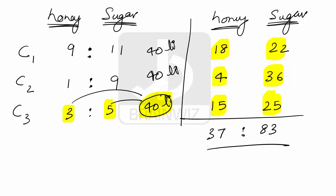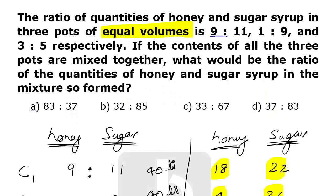So we can say that the final ratio is 37:83. So option D is the perfect answer. Thank you.